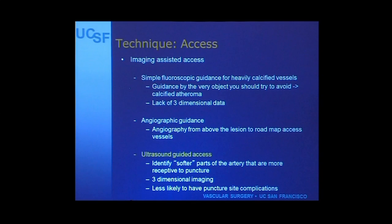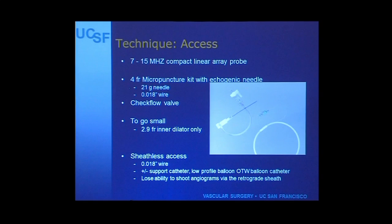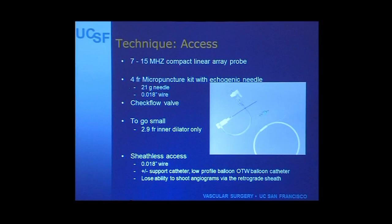With an echogenic needle you can usually access the vessel in a single puncture. My preference is a compact linear array probe at high frequency, although you can use a sonocyte. I like to use an echogenic needle. The micropuncture is nice because you can apply a check-flow valve with a sidearm sheath to work through. If you want to go small and minimize the size of the arteriotomy, you can just use the inner cannula, which is a 2.9 French dilator only - if you only need wire access and not catheter support. They do make a special pedal access kit, essentially this with a shorter needle and shorter catheter, and other companies are developing their own access kits.